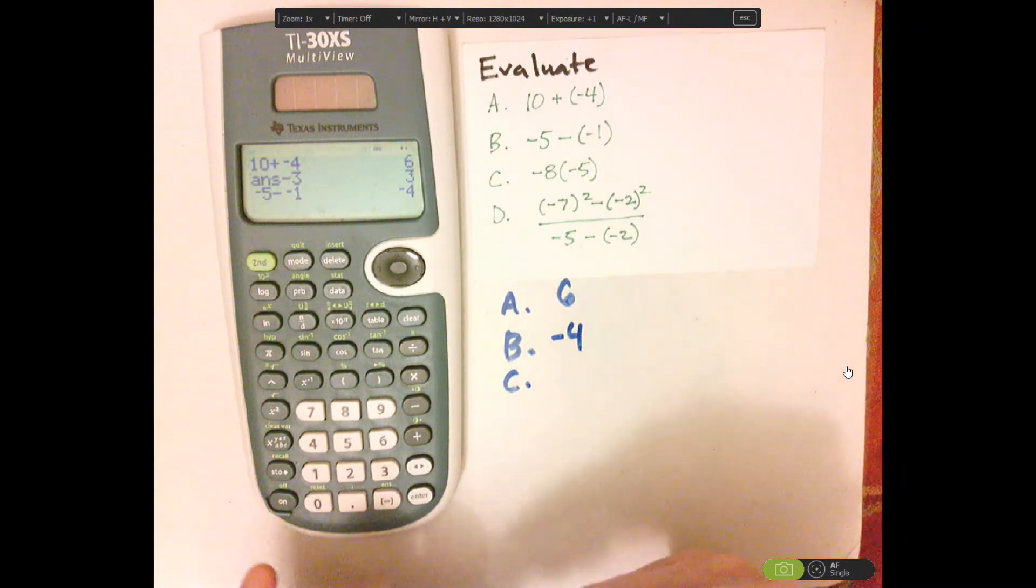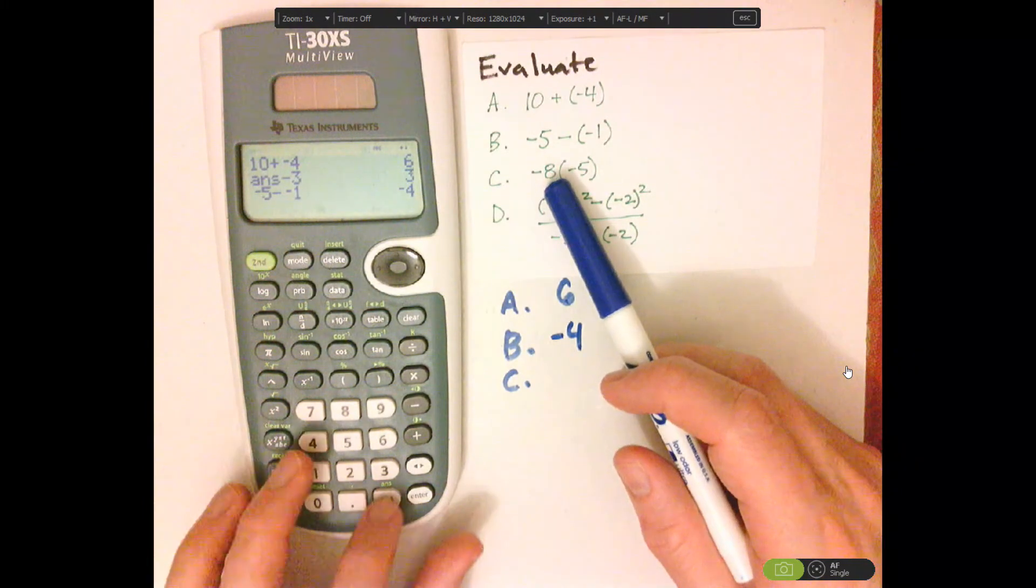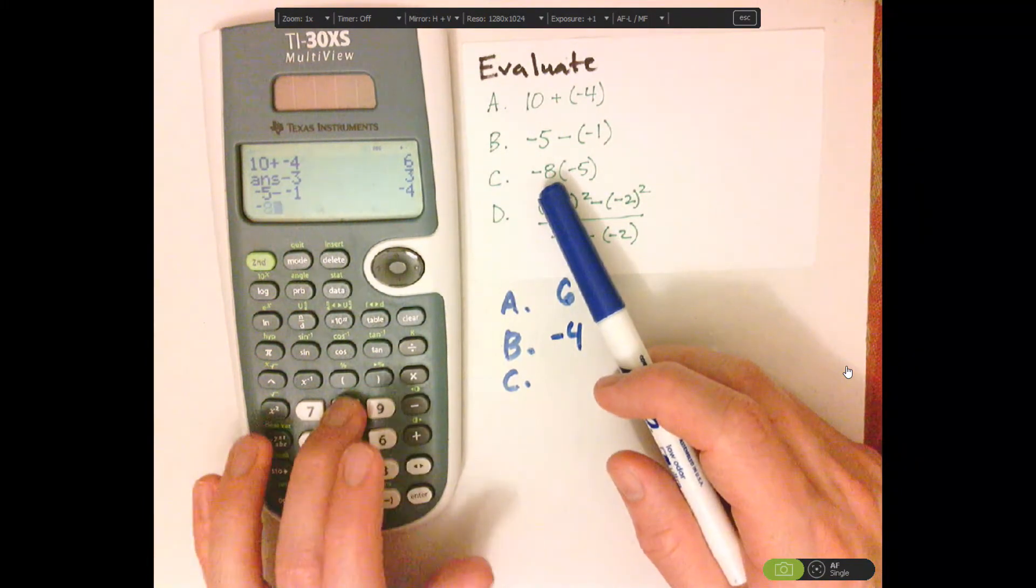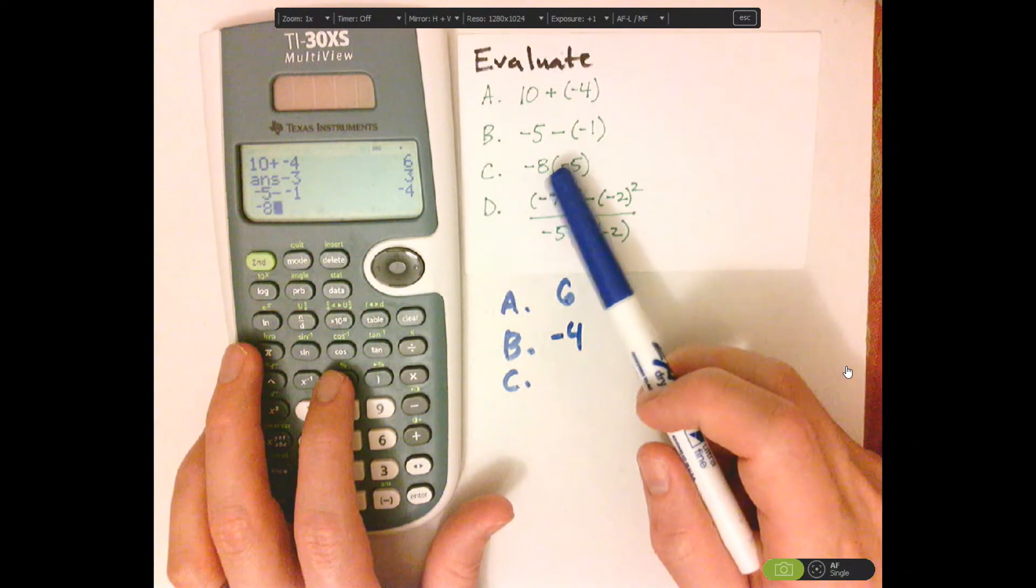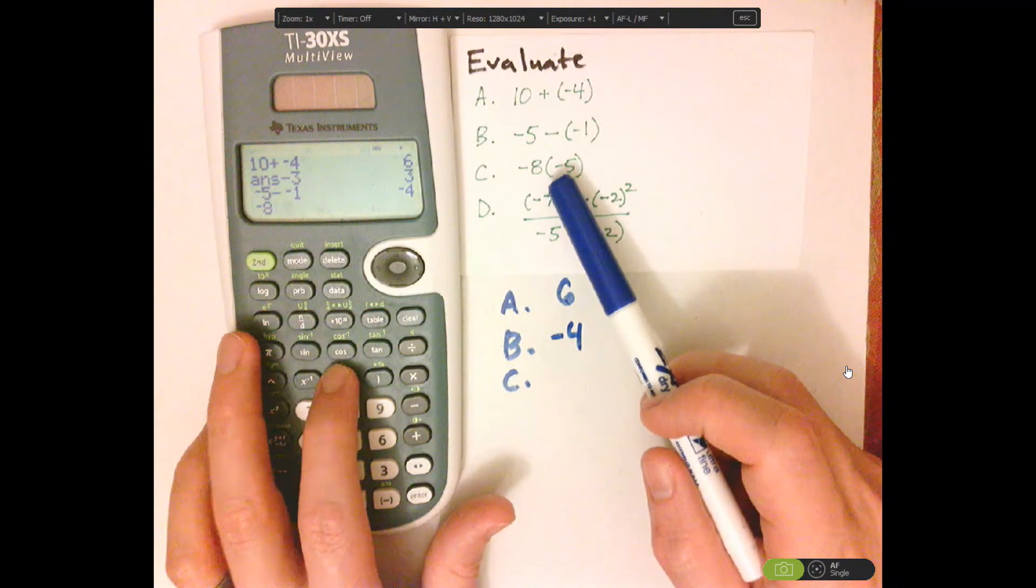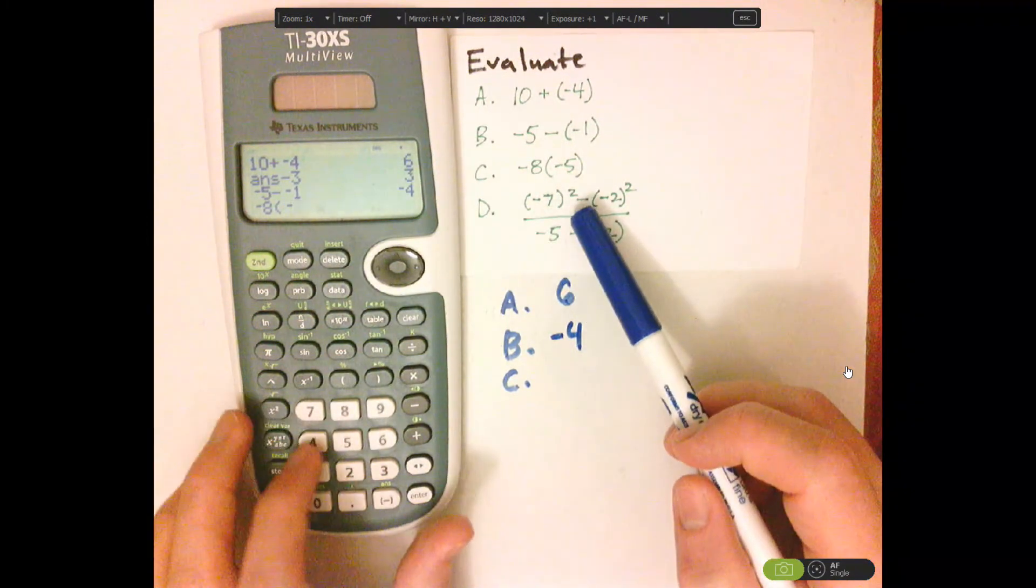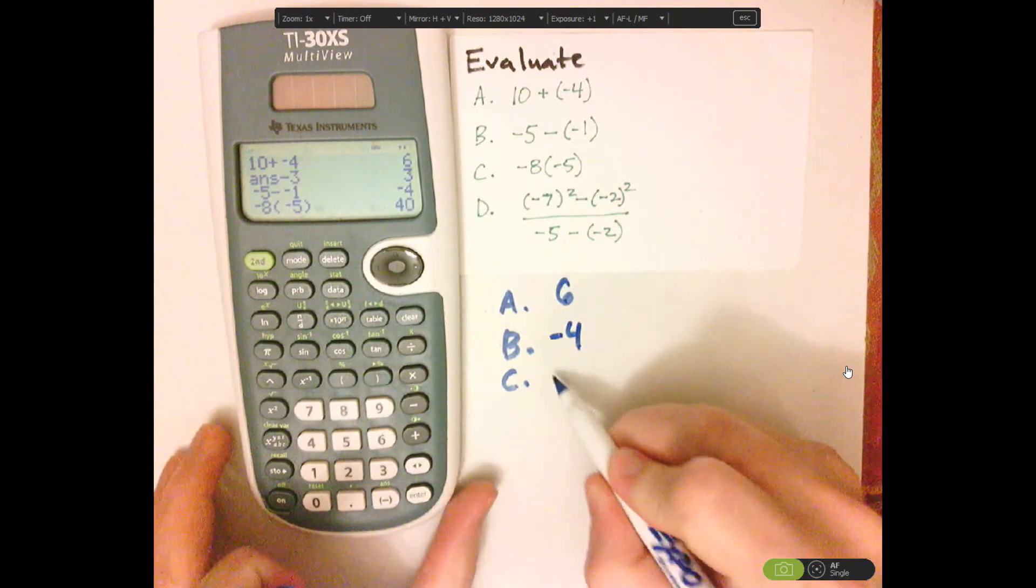All right, let's look at letter C. Letter C, notice that it starts off with a negative, so that's negative 8. Now, the parentheses here is multiplication, so I do need to put the parentheses there. So parentheses, negative 5, close the parentheses. It's going to give me positive 40.